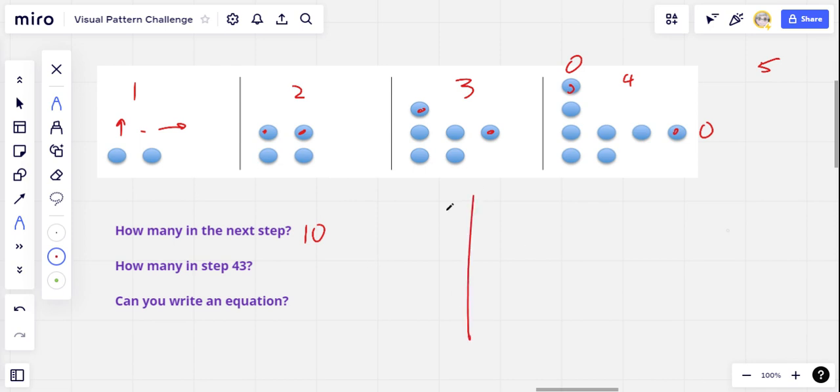And if we look at the numbers for this pattern, I think we'll see it's pretty straightforward. So we'll look at the step number and the number of dots. In step one, we've got two. In step two, we've got four. In step three, we've got six. And in step four, we've got eight. And in step five, we're predicting ten.